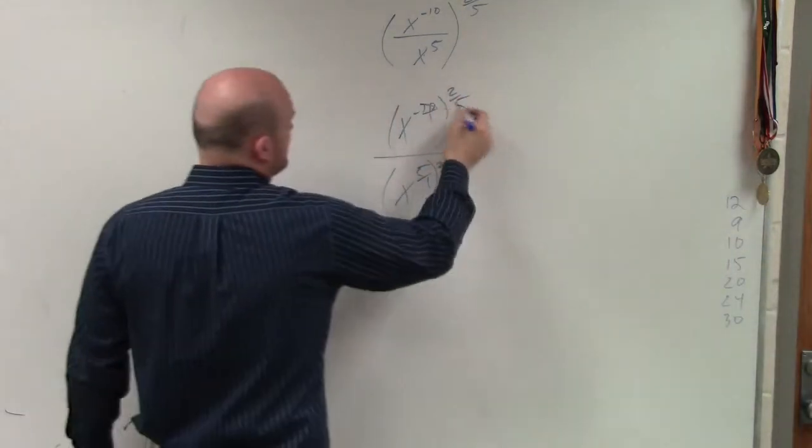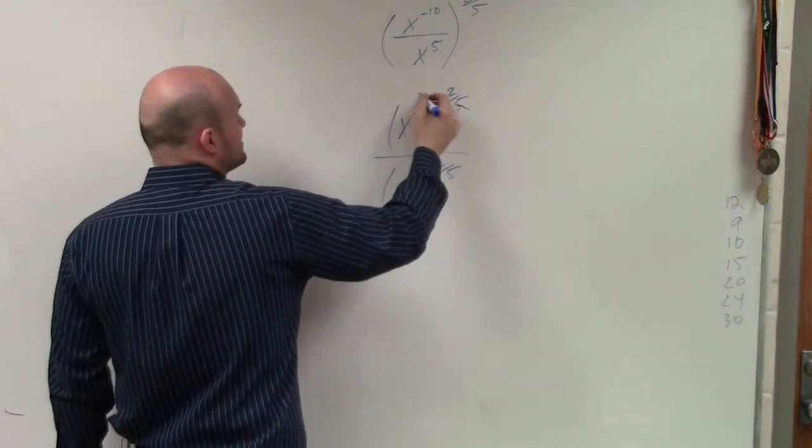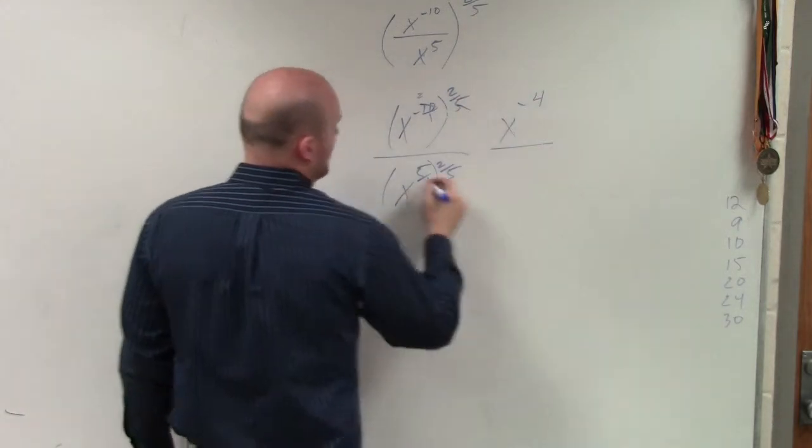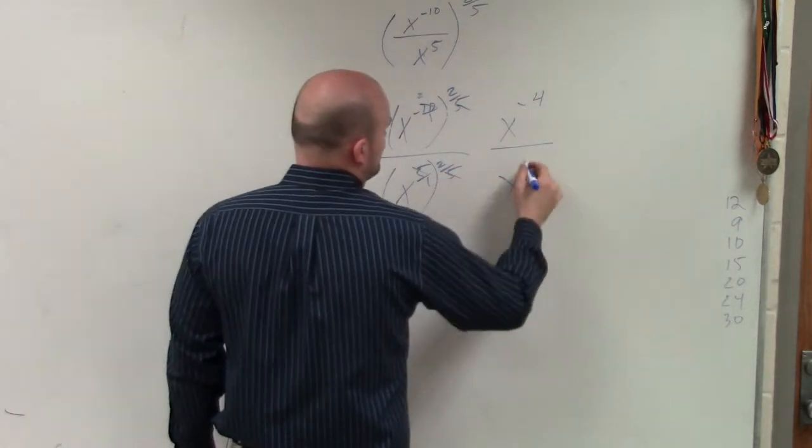So therefore, this can be simplified in the 2. So I have x to the negative fourth over x squared.